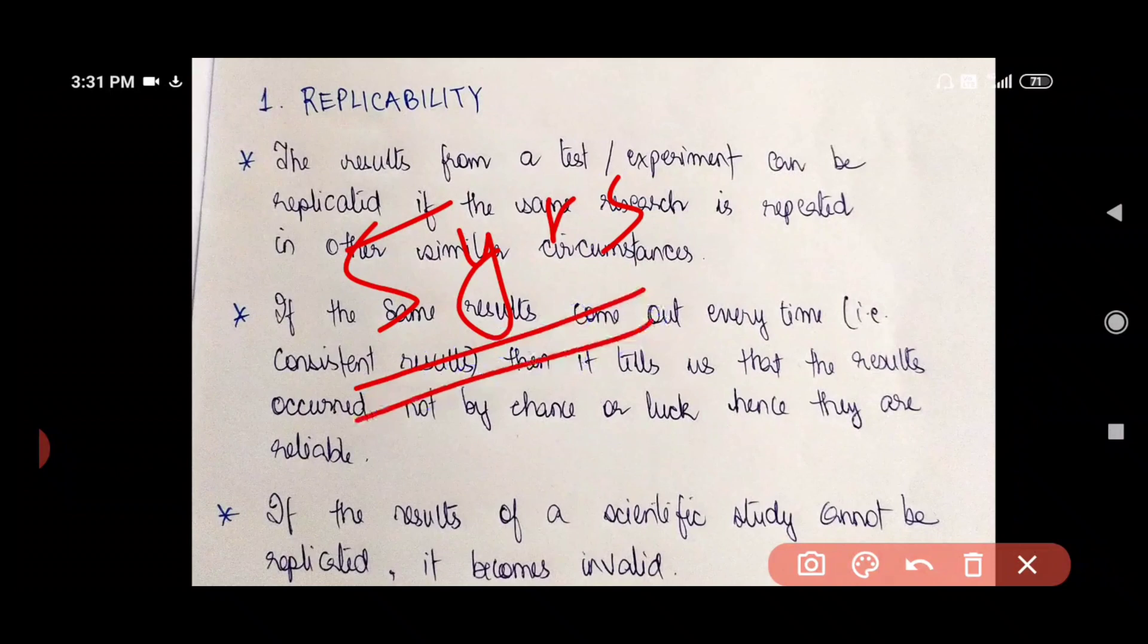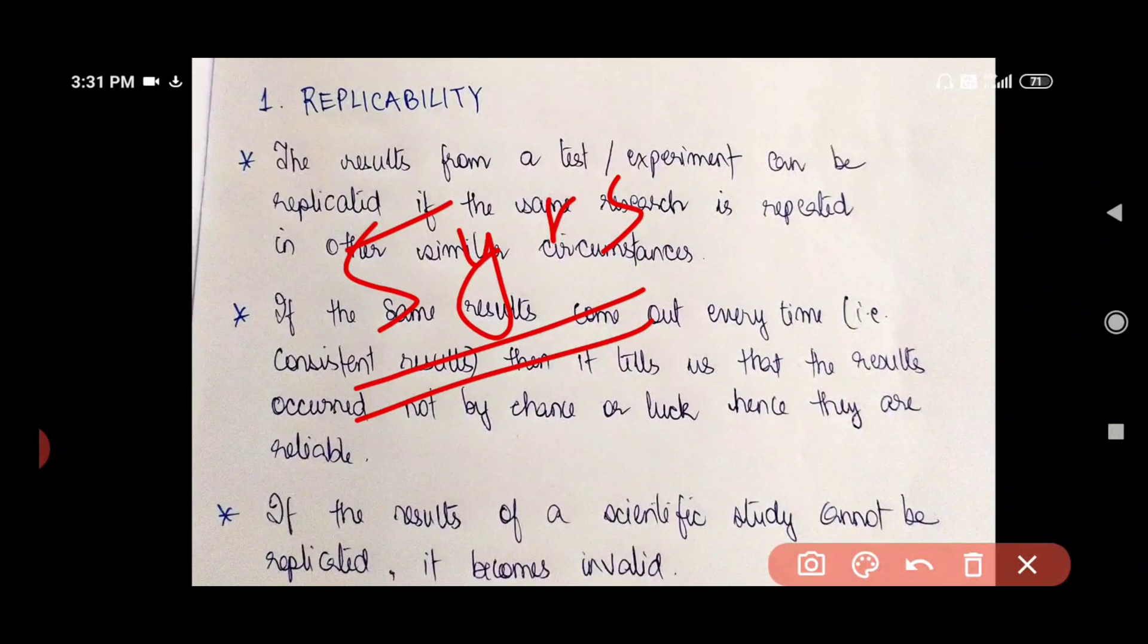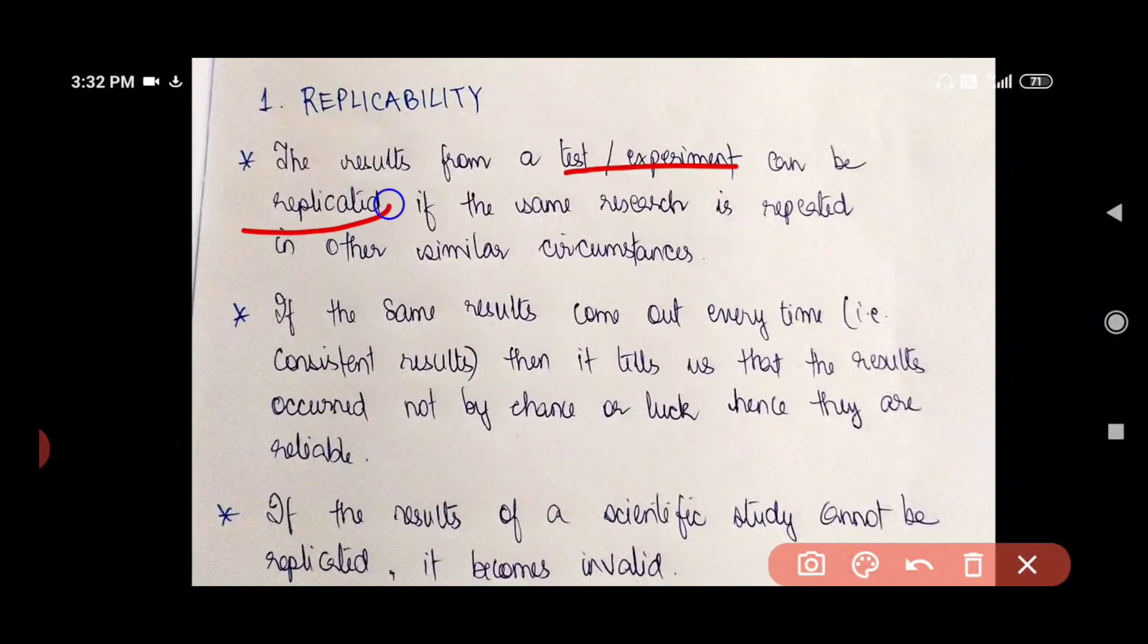And so I carry out the research and after the research is over, I find that the results to my study are very similar to yours. They are similar to the results of your study. Then that is when we say the research is replicable. That my friend is what we mean by replicability. When the results from a test or experiment can be replicated, replicated means reproduced.